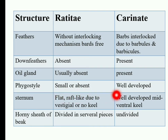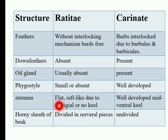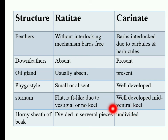In Ratites birds, the sternum is flat and raft-like due to a vestigial or absent keel. The keel, also known as the carina, is flat and vestigial in Ratites. In Carinates birds, the keel is very well developed in the mid-ventral surface of the sternum.